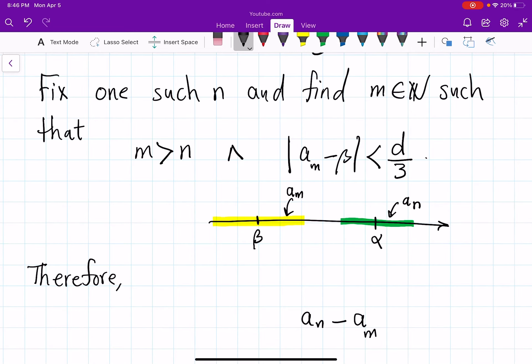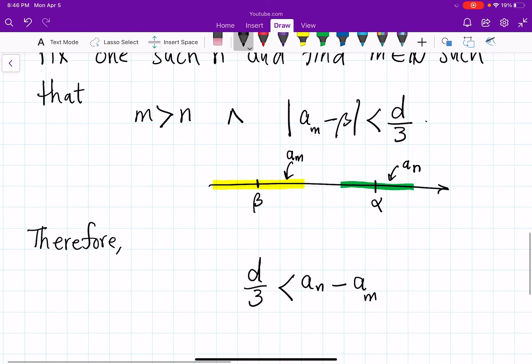how tiny or how big can aₙ minus aₘ be? So the smallest that this can get is when you hit the extremes in both these cases like the closest that green gets to the yellow and that is I claim is d over 3 so if you don't believe me again, go and compute this but actually